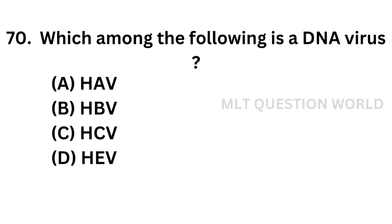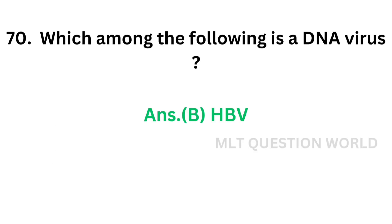Question 70. Which among the following is a DNA virus? Option A: Hepatitis A virus. Option B: Hepatitis B virus. Option C: Hepatitis C virus. Option D: Hepatitis E virus. The correct answer is Option B. Hepatitis B virus is a DNA virus. All the others are RNA viruses.